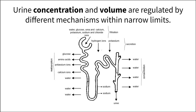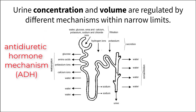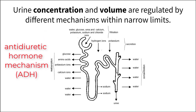To keep things simple, let's focus on one important mechanism that can help us understand this connection between urine volume and concentration: the antidiuretic hormone mechanism, noted as ADH.